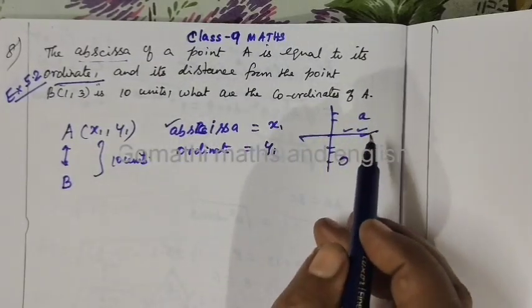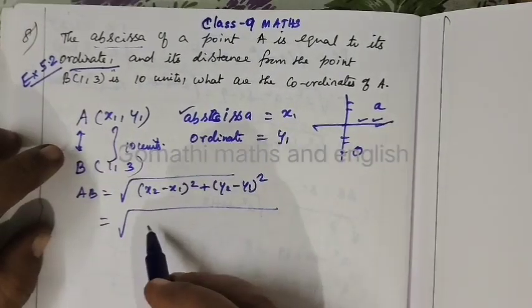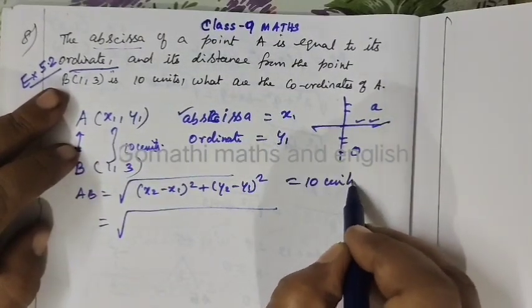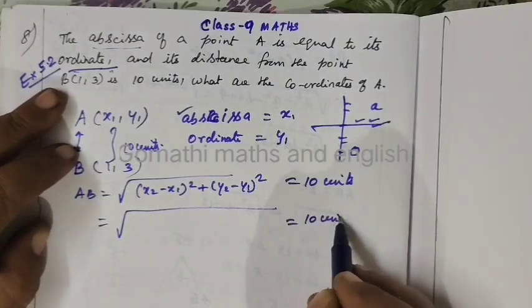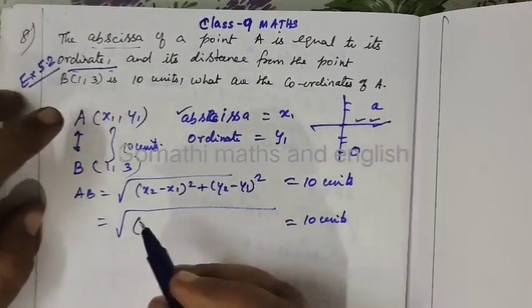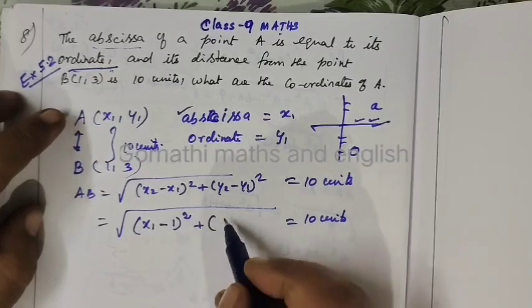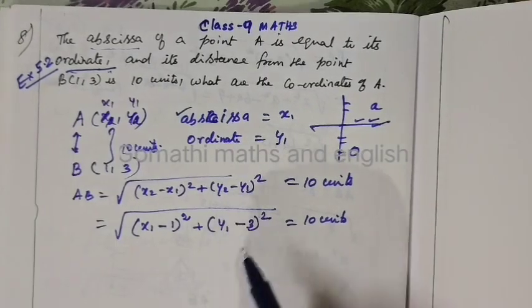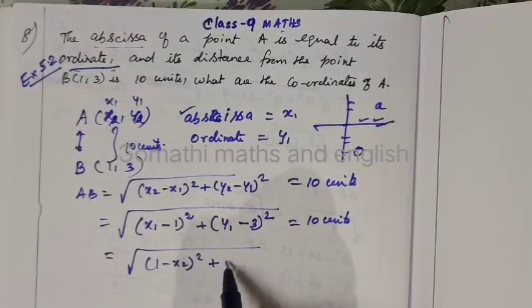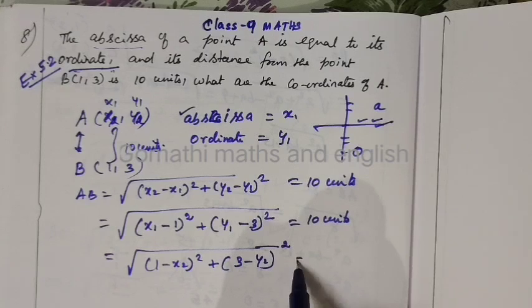A is equal to its value. So distance from AB equal to root of x1 minus whole square then y1 whole square. This is given as 10 units. So x1 minus whole square then y1 whole square, 1 minus x2 whole square then 3 minus y2 whole square. This is equal to 10 units.